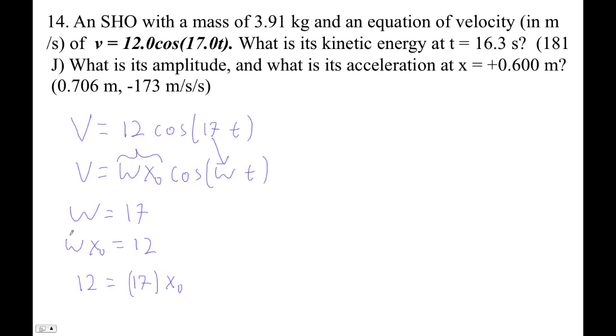Okay, so we can find x naught, which is 12 divided by 17. That comes out even to 0.70588. Okay, so x naught is 0.706 meters, right?